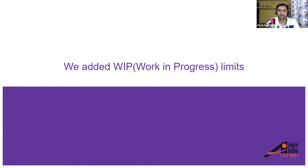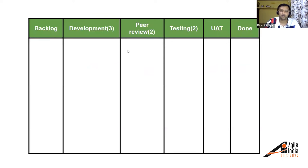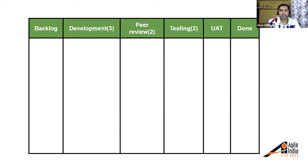We defined a number for each column — above which no new items are allowed. For example, the development column has a limit of three, peer review has a limit of two, and testing has a limit of two. You may ask how we arrived at three, two, and two — it's experimentation. We started with three because we have three developers and experimented from there. If it doesn't work out, we can always change based on new learnings.